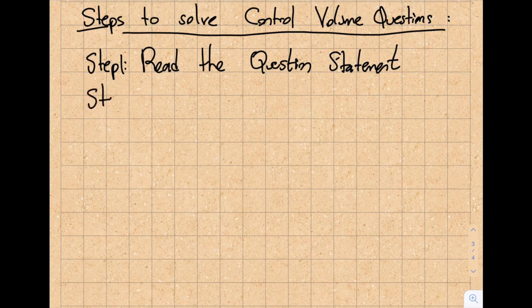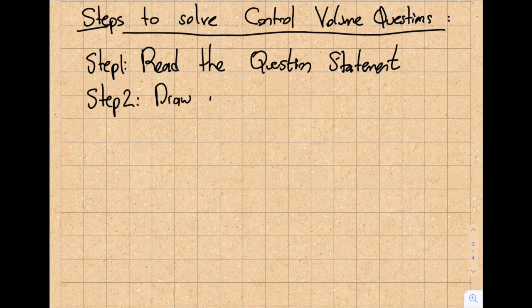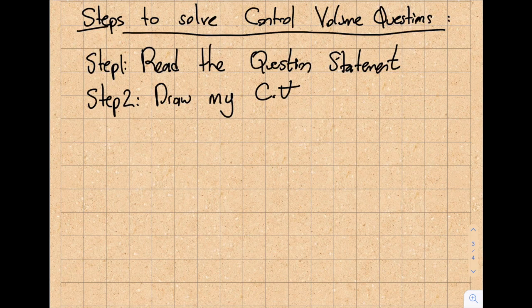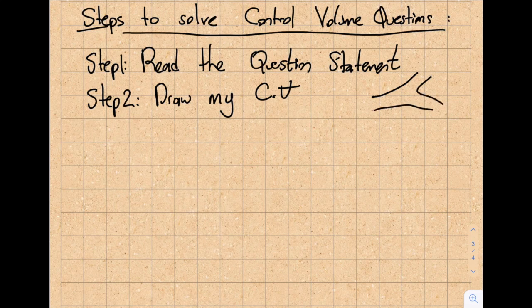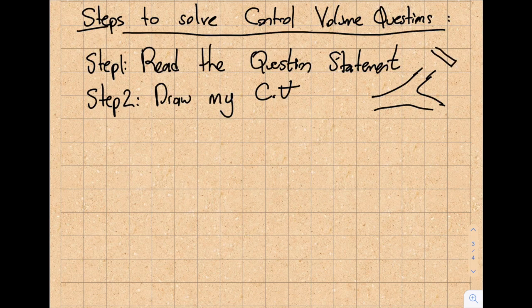Step two is draw my control volume. So I have a control volume because I'm going to base all my analysis on how I pick my control volume. Let's give an example over here. Let's stick with the example that we've been giving till the beginning of this video. And let's say that I have a plate over here, right?